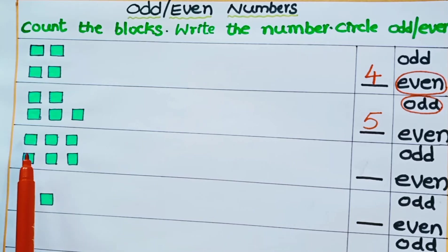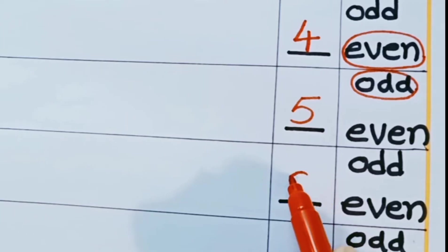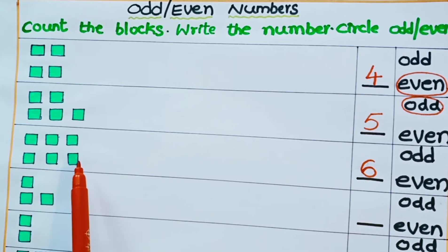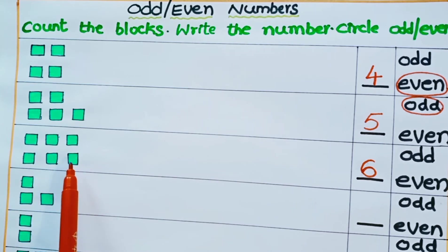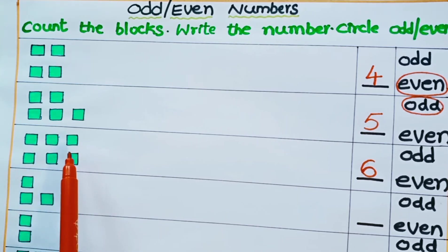Children look at the next row. How many blocks are there? 1, 2, 3, 4, 5, 6. There are 6 blocks. Now is 6 an odd number or even number? Just look at the blocks. If all the 6 blocks can form pairs then it is an even number. How many pairs are here? 1 pair, 2 pairs, and 3 pairs.